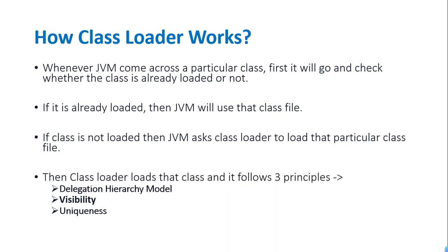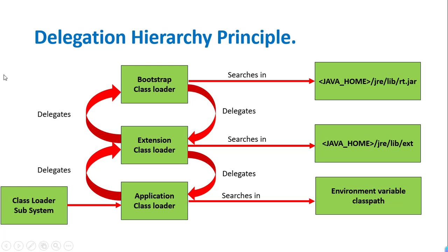The class loader loads that class and follows three principles: Delegation Hierarchy, Visibility, and Uniqueness. For the Delegation Hierarchy principle: the JVM asks the class loader subsystem to load a particular class. The class loader subsystem asks the Application class loader, which delegates to the Extension class loader, which then delegates to the Bootstrap class loader.